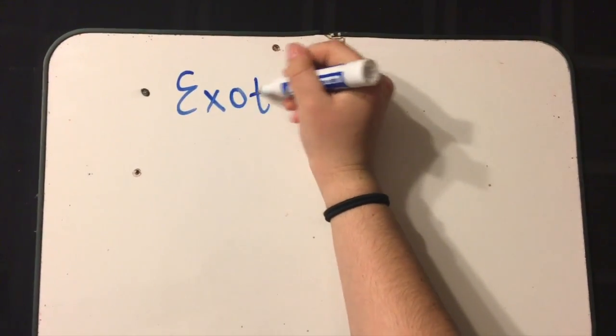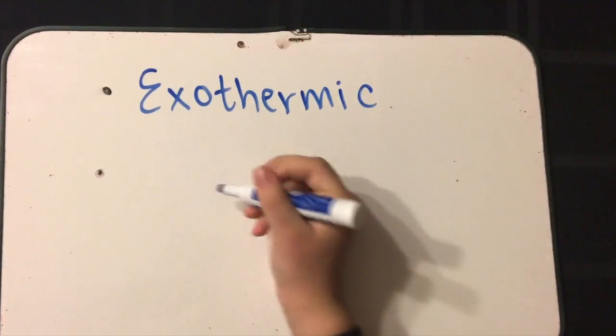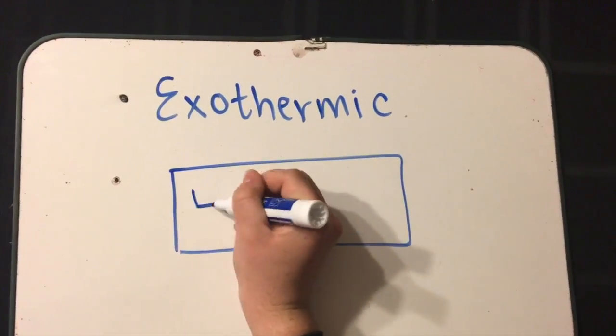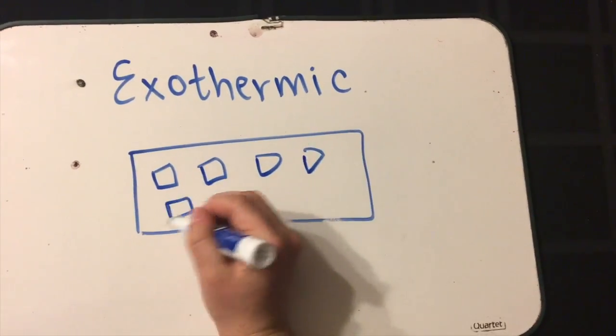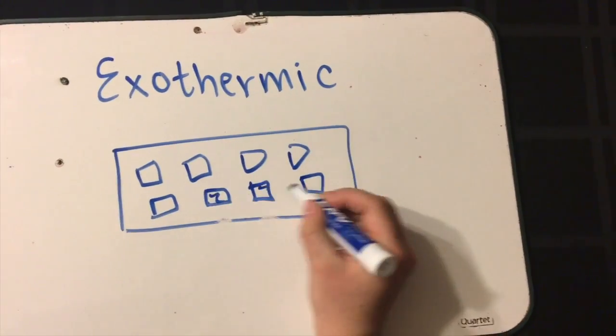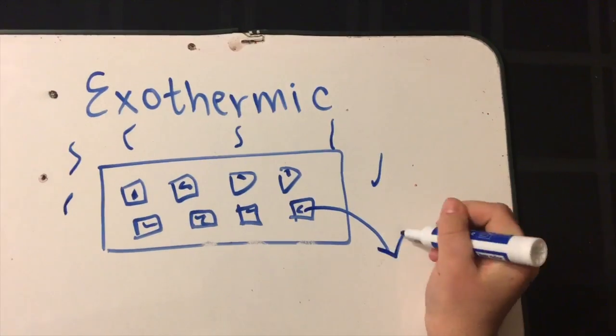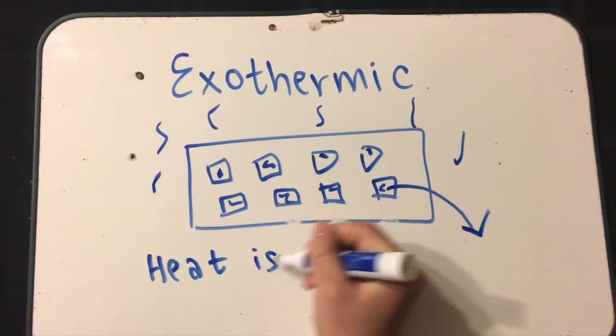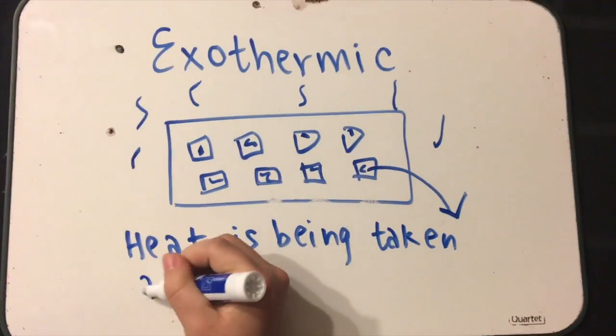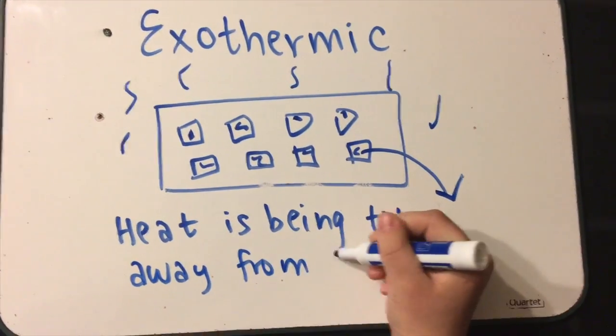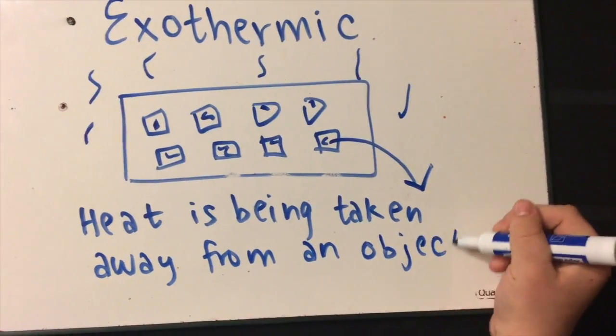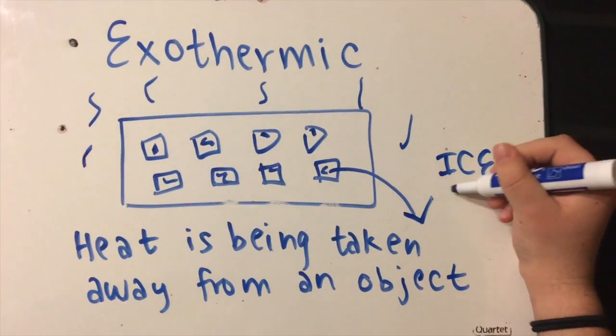As you can probably imagine, an exothermic reaction is quite the opposite of an endothermic reaction. If in our endothermic reaction, we had heat being absorbed into an object, then in an exothermic reaction, we have heat being taken away from an object. We can use ice as our example here as well. If ice is being frozen, then the heat is being taken away, thus making it an exothermic reaction.